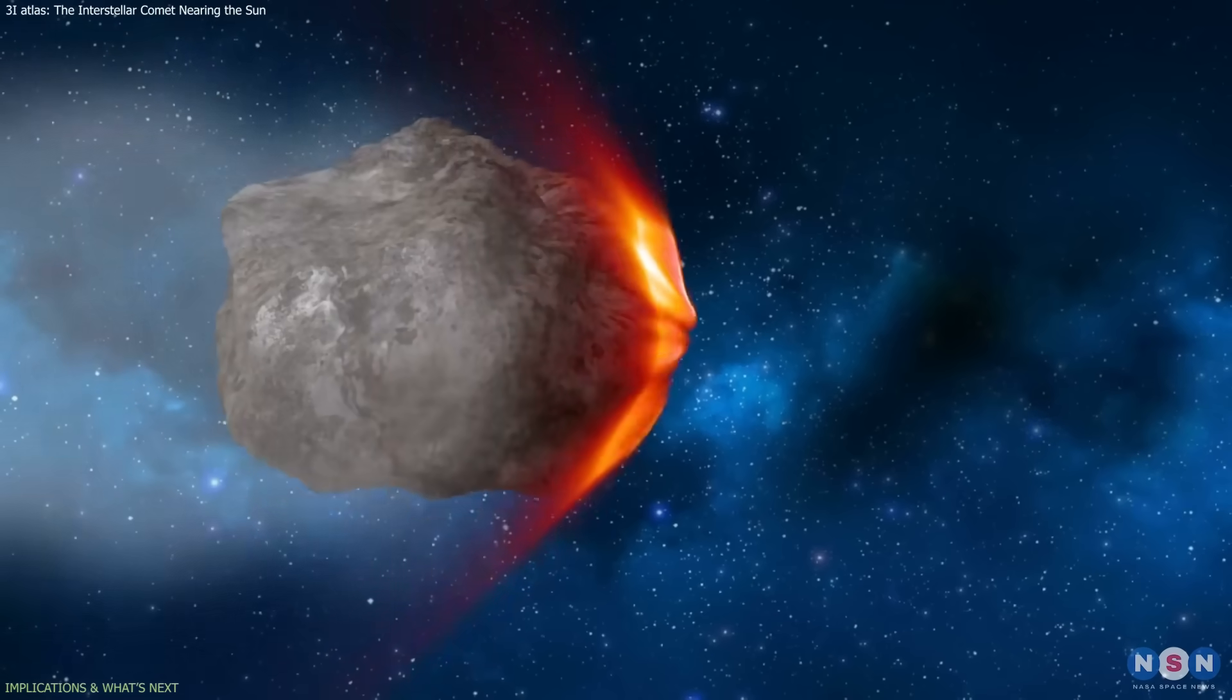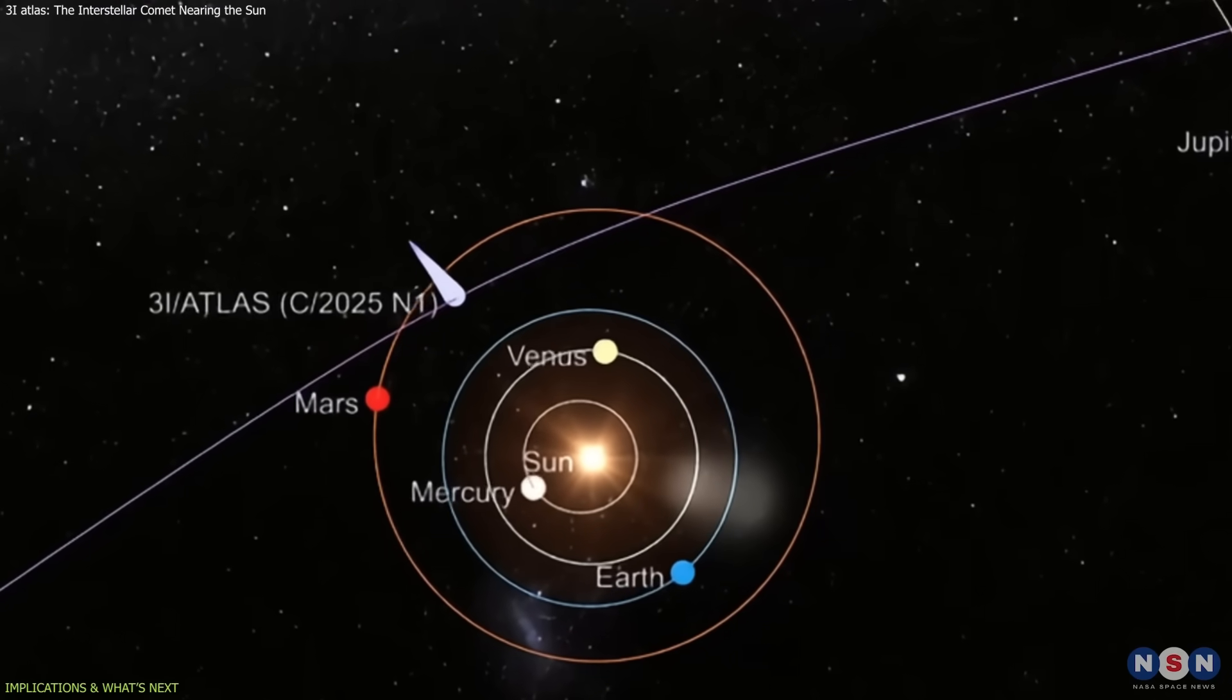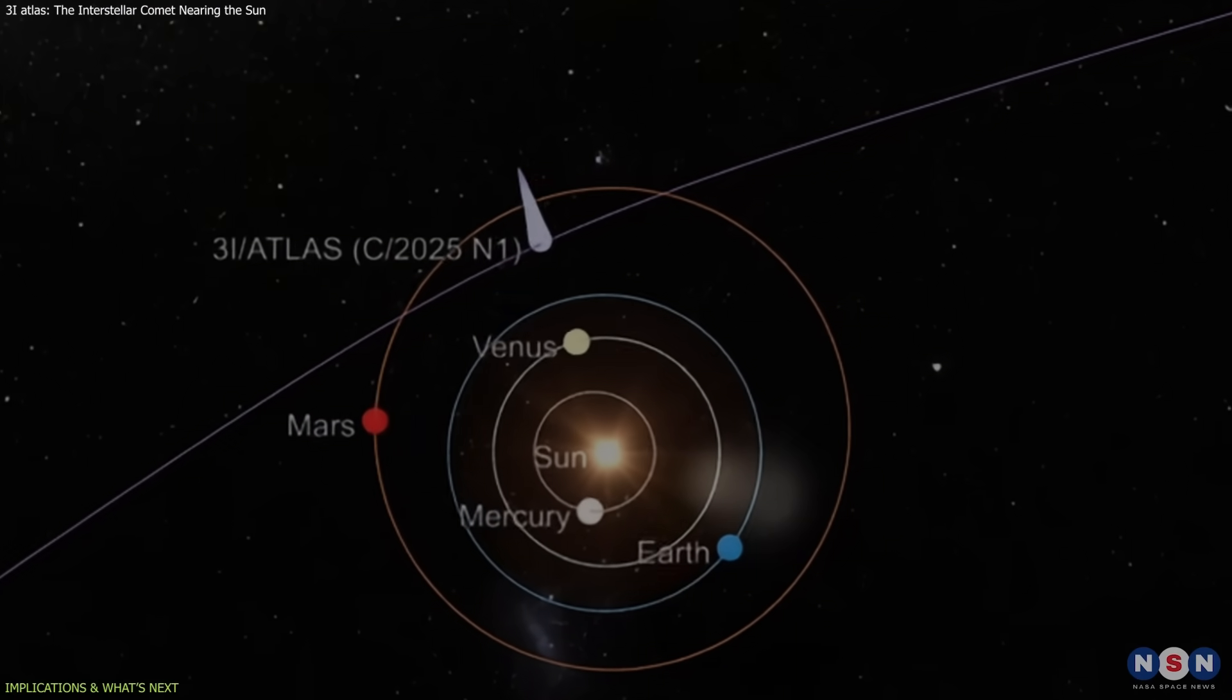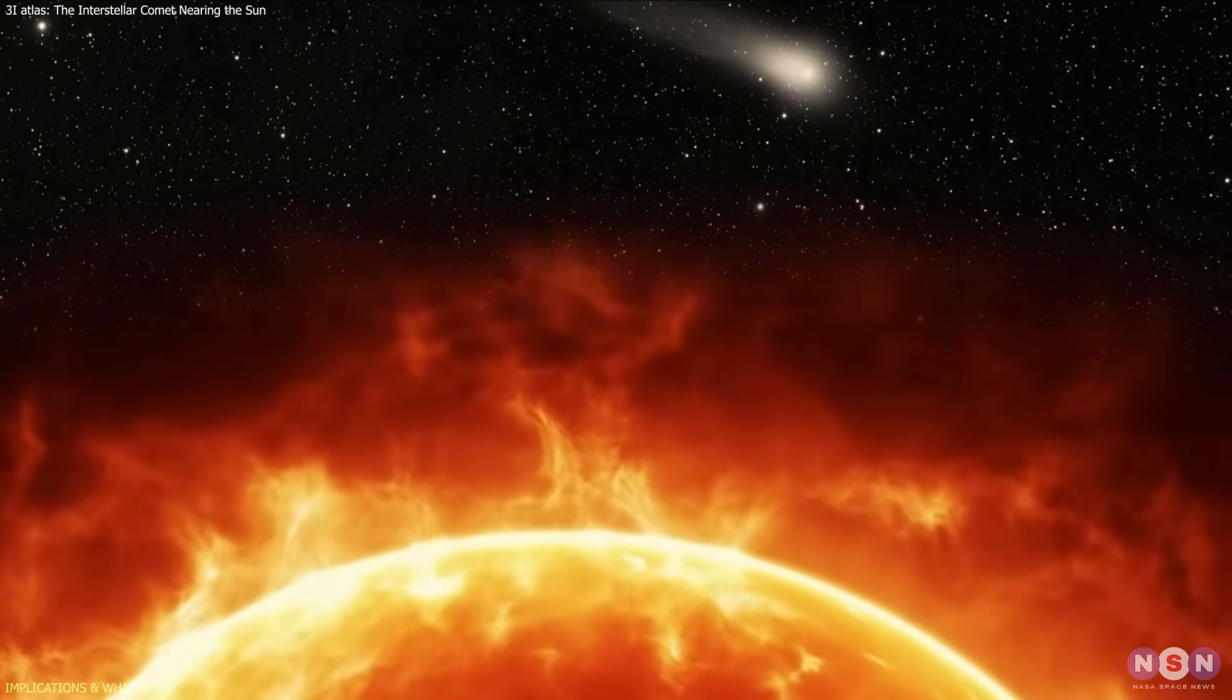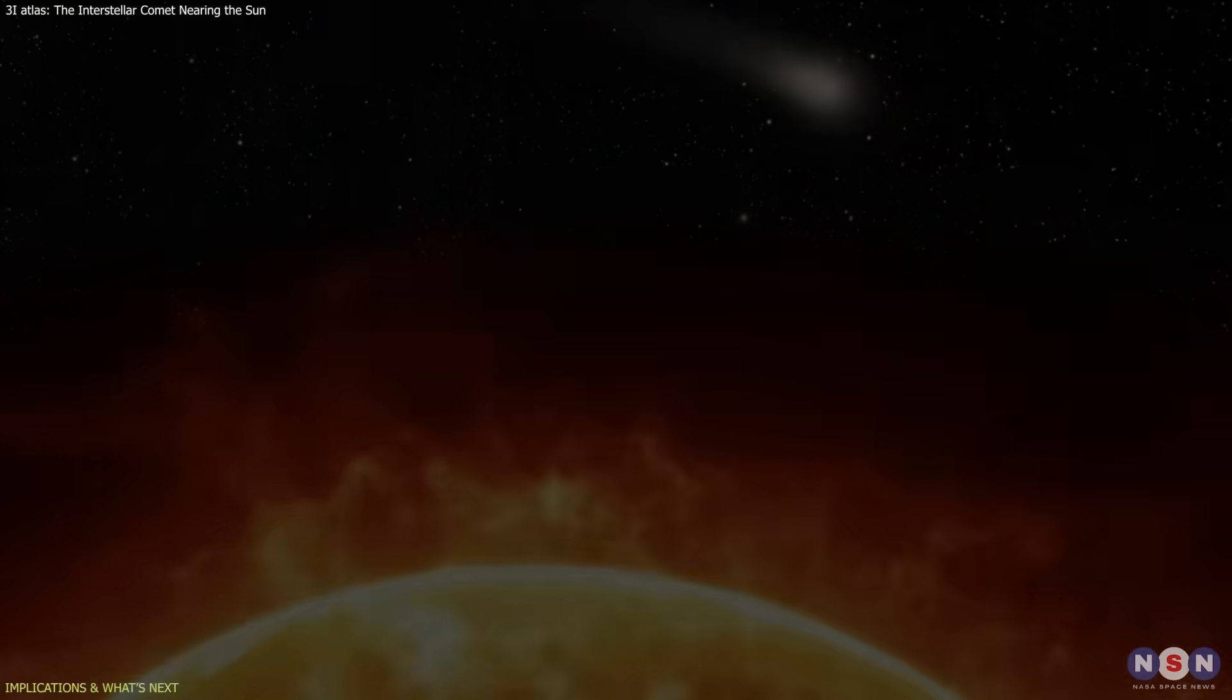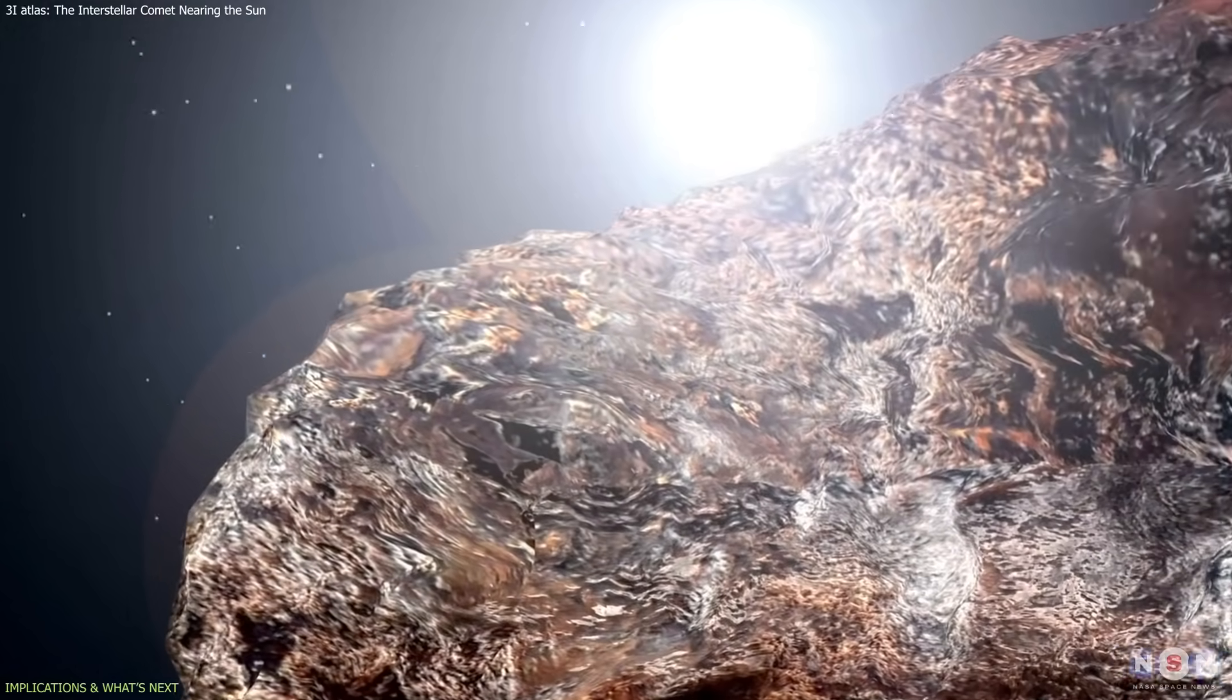The most critical moment in this story is approaching fast. On October 29th, 3i Atlas will reach perihelion, its closest distance to the Sun, about 0.53 astronomical units. At that point, it will face maximum solar heating, which will determine what happens next.